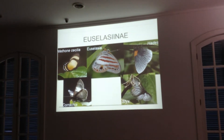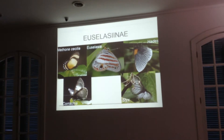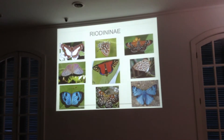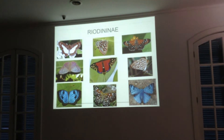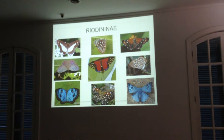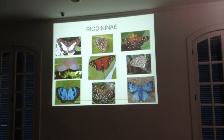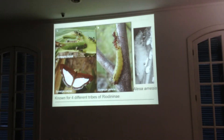These are the neotropical subfamilies. The Euselasiinae have around 180 species and are a fairly homogeneous subfamily. The great diversity of morphology and ecology is found in the Riodininae subfamily. As you can see, they are very beautiful and very small, with very interesting biological phenomena occurring within this group.